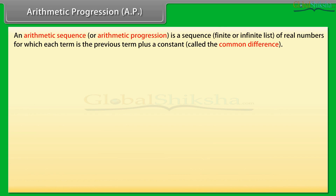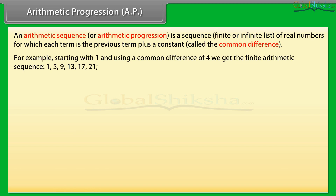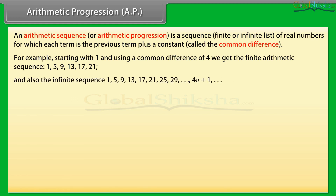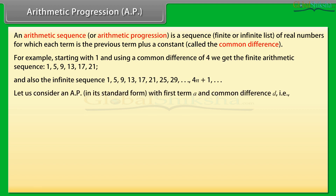Arithmetic Progression (AP): An arithmetic sequence or arithmetic progression is a sequence — finite or infinite list — of real numbers for which each term is the previous term plus a constant called the common difference. For example, starting with 1 and using a common difference of 4, we get the finite arithmetic sequence 1, 5, 9, 13, 17, 21, and also the infinite sequence 1, 5, 9, 13, 17, 21, 25, 29, ... up to 4n + 1.